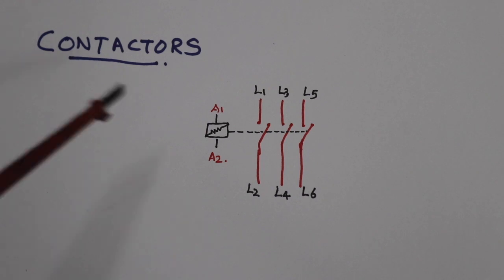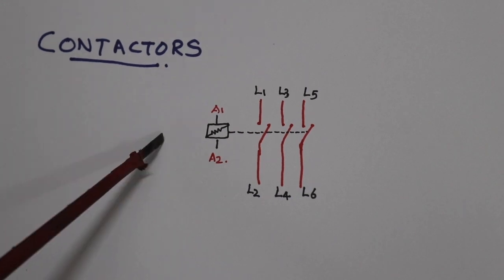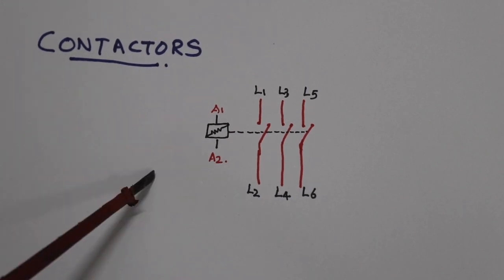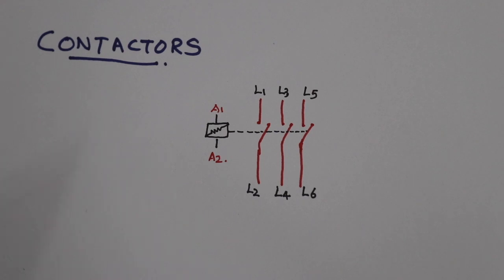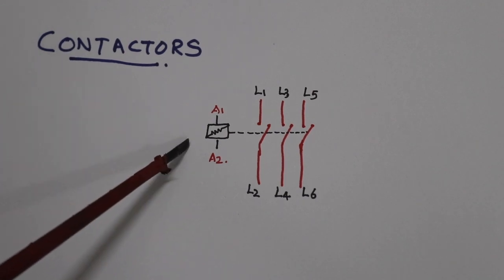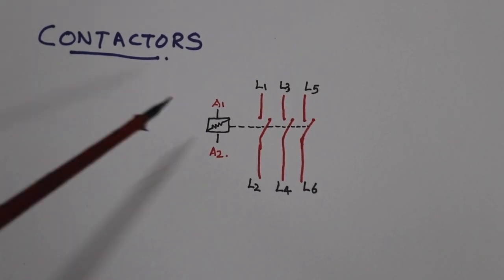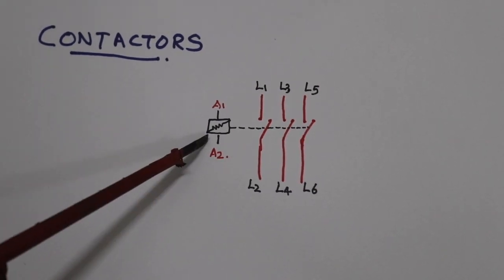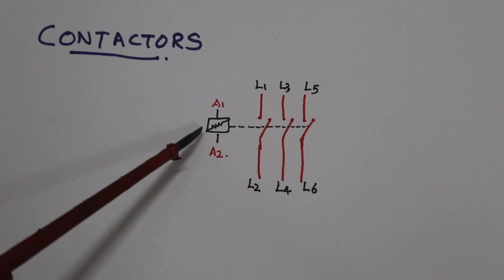This is the A1/A2 coil. There are two terminals — a starting terminal and an ending terminal. This coil is available in the circuit at 24V, 48V, 115V, 220V, and 440V. Now we will select this coil.